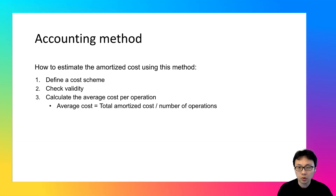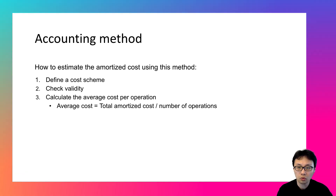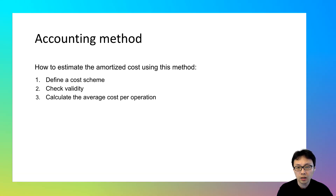The third step is to calculate the average cost per operation. Same as other amortized analysis methods, it divides the total amortized cost by the number of operations to derive the average cost. To get a better understanding of the three steps, let's go through an example together.